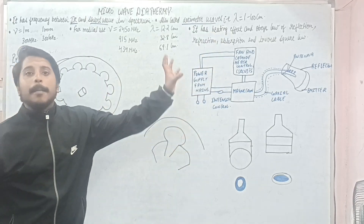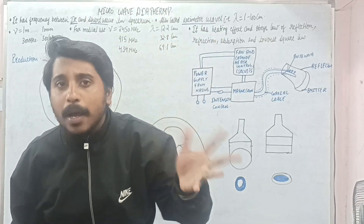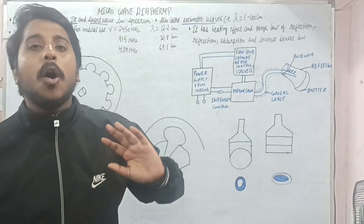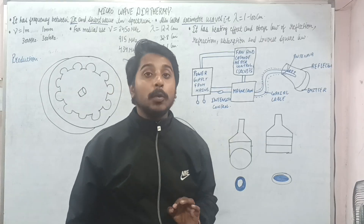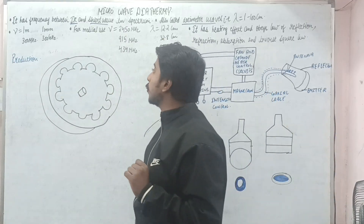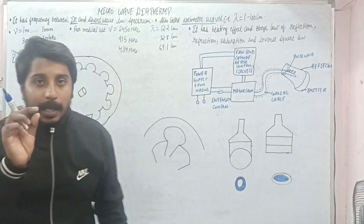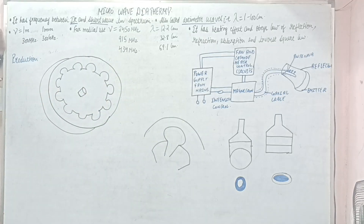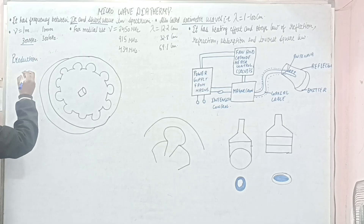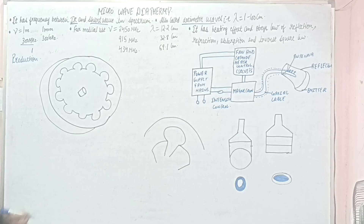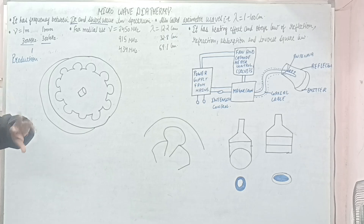Why is it called the decimeter wave? Because its wavelength is around 1 centimeter to 100 centimeter, or we can say 1 meter. That is why it is called the decimeter wave — this can be asked in your viva question. In relation to wavelength: if the wavelength is 1 meter, then the frequency will be 300 megahertz, and at 1 millimeter it will become 300 gigahertz.